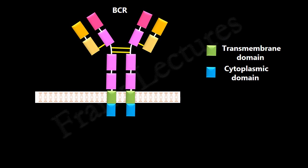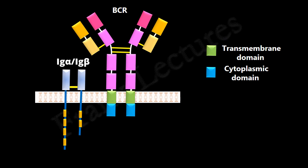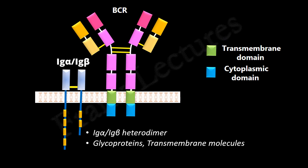The signal to the nucleus is conveyed by two accessory proteins associated with the B cell receptors. These accessory proteins are Ig-alpha and Ig-beta. Together they form a heterodimer held together by a disulfide bond. Ig-alpha and Ig-beta chains are glycoproteins and, as seen in the image, they are transmembrane molecules. Their extracellular portions consist of a single Ig-like domain. This heterodimer conveys the intracellular signals indicating that antigen has been found. Note that Ig-alpha and Ig-beta molecules are expressed only in B cells.